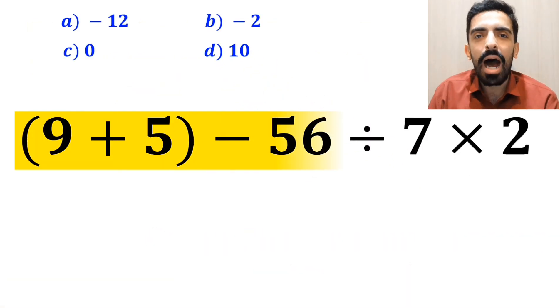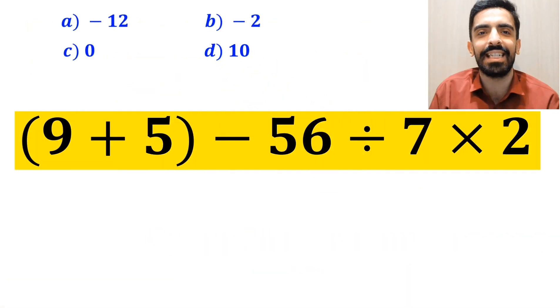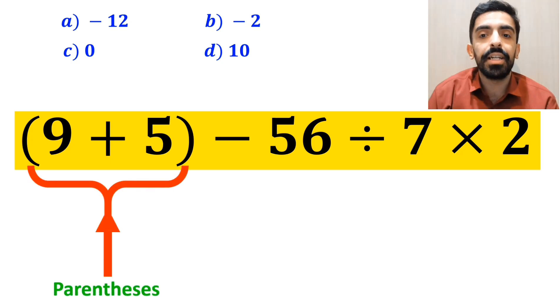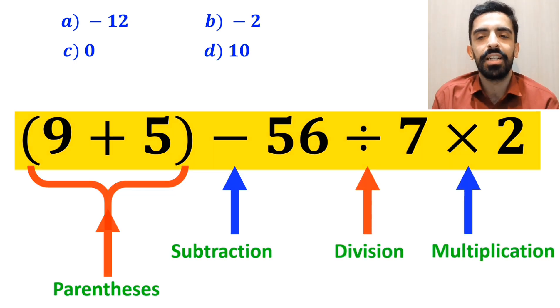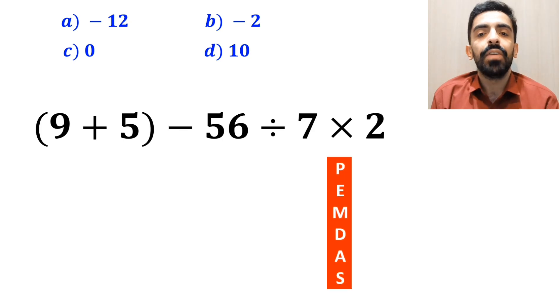Alright, now let me show you how to solve this expression correctly. As you can see on the screen, in this expression, first we have parentheses, then a subtraction sign, followed by a division, and finally a multiplication. To solve this question, we need to follow the PEMDAS rule step by step.